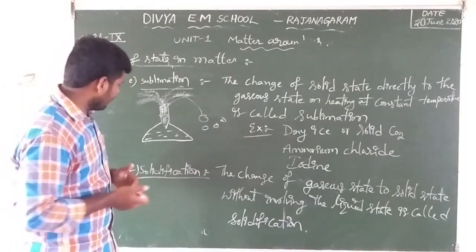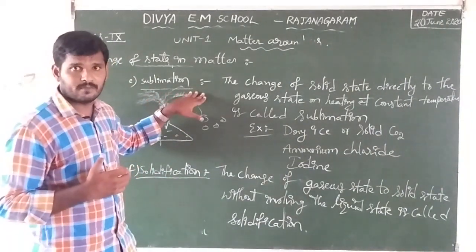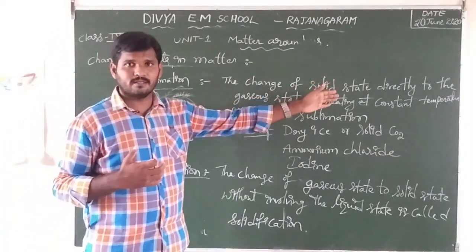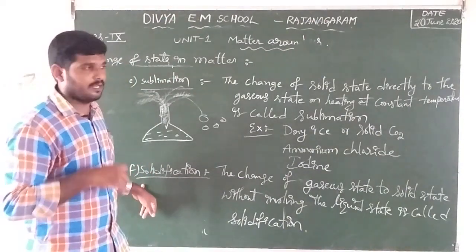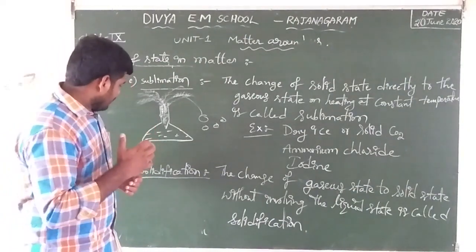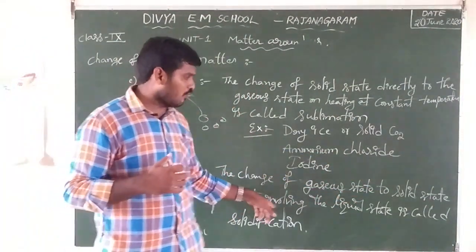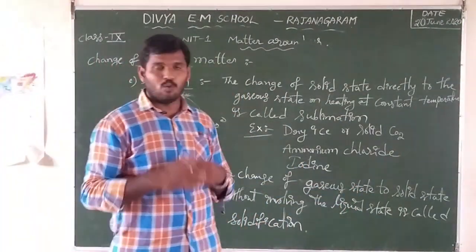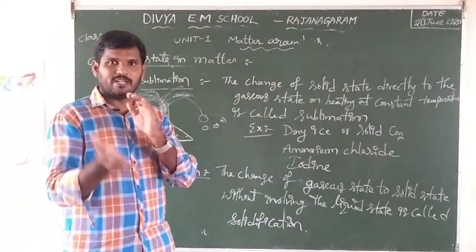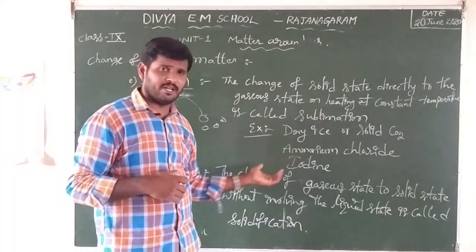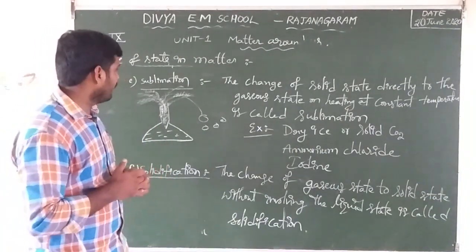After that, we discuss solidification. Solidification is exactly the reversible process of sublimation. In sublimation, solid converts into gas; in solidification, gas state converts directly into solid, neglecting the liquid state. The definition: the change of gas state to solid state without involving the liquid state is called solidification. Examples: dry ice kept in a cool place where vapor converts directly into solid; ammonium chloride and iodine — these kept in a cool place like a refrigerator convert from vapor state into solid state.